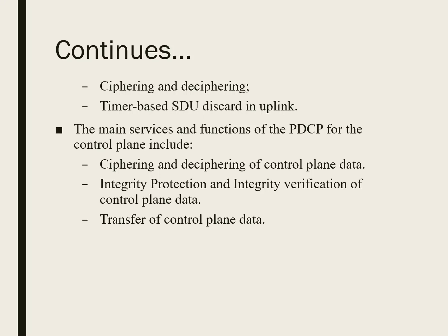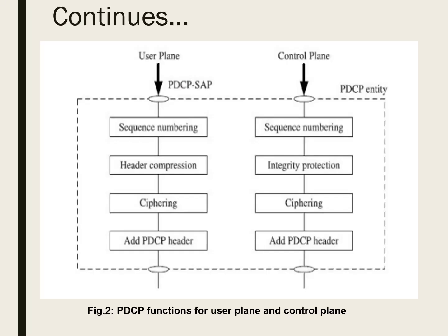The PDCP also has functions related to the control plane: ciphering and deciphering of control plane data, integrity protection and integrity verification of control plane data, and transfer of control plane data. In the user plane, the PDCP at the service access point performs sequence numbering of PDUs, header compression, ciphering, and adding the PDCP header to generated PDUs. In the control plane, it performs sequence numbering of control PDUs, integrity protection, ciphering, and adding the PDCP header.